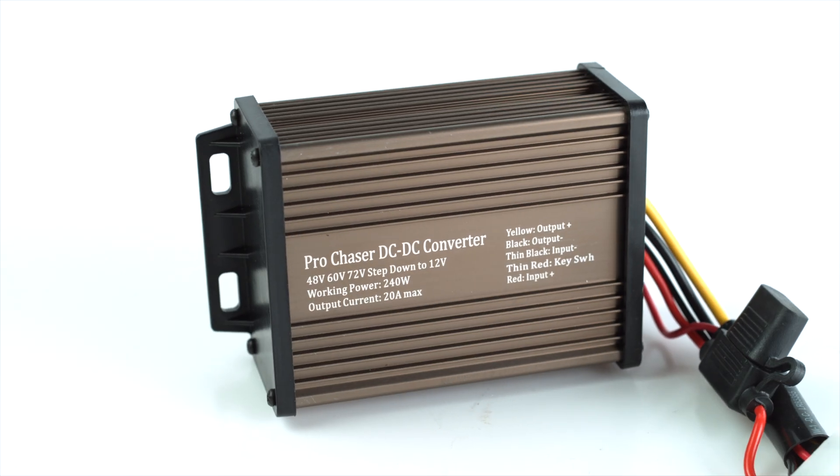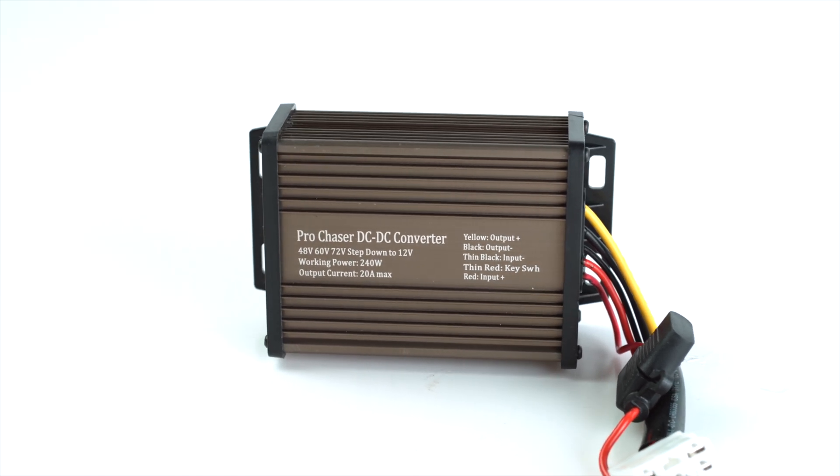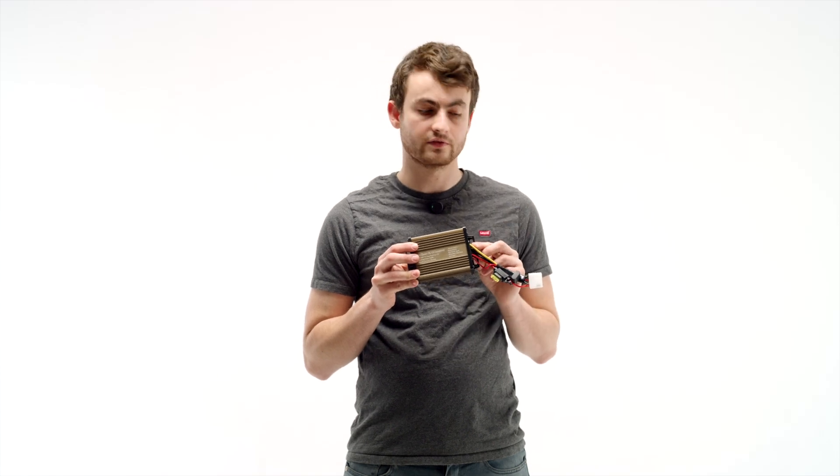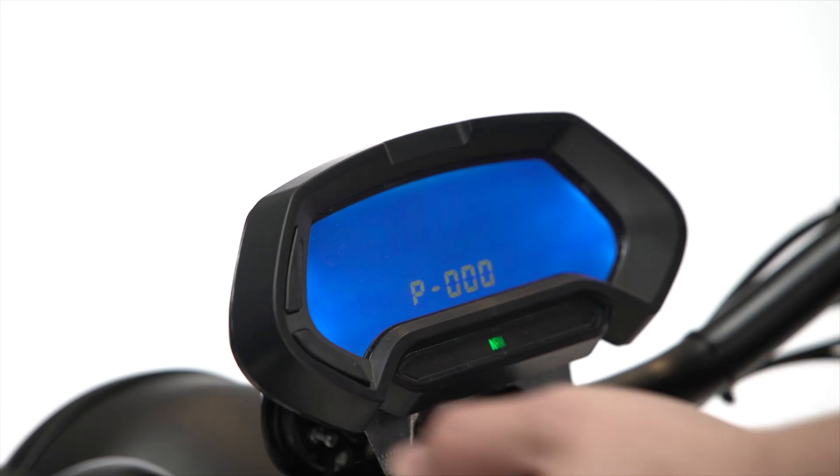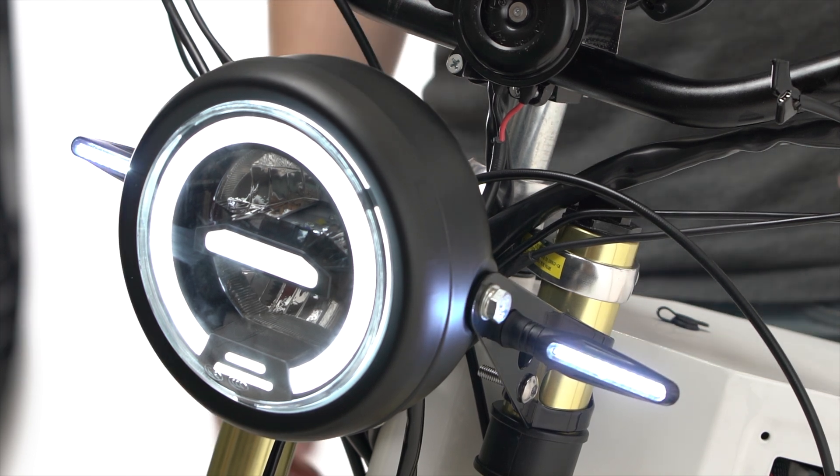The next electronic component I'll talk about is the DC-DC. The DC-DC converts DC power to DC power. In this case it'll be converting the battery voltage from around 60 to 80 volts down to a stable 12 volts. Now that 12 volts will run our display as well as our turn signals and lights and anything else you want to connect up to the bike.